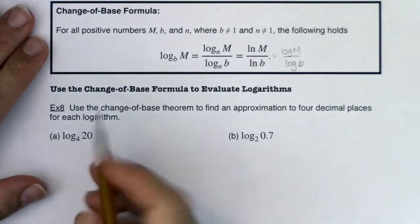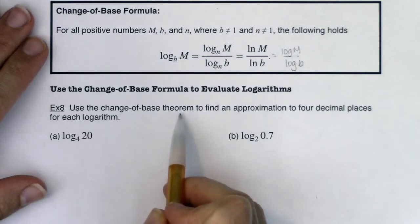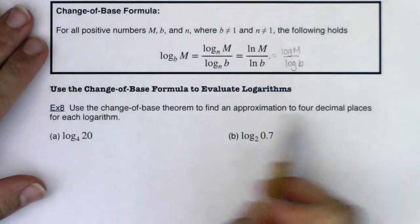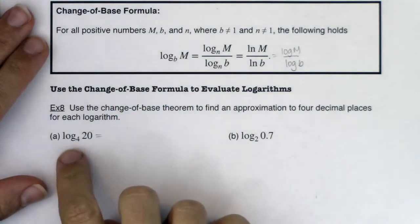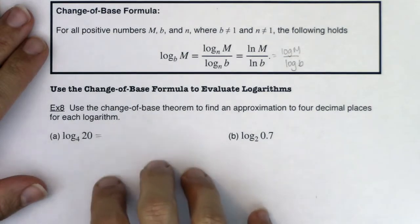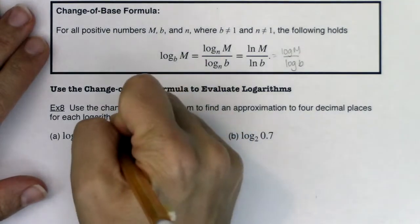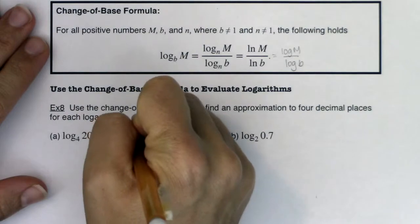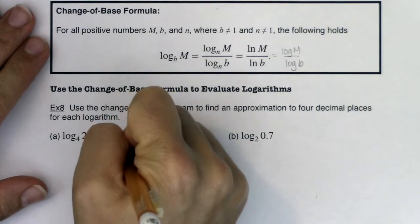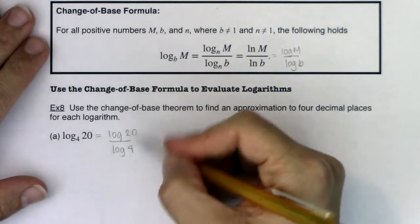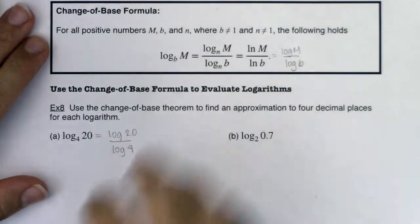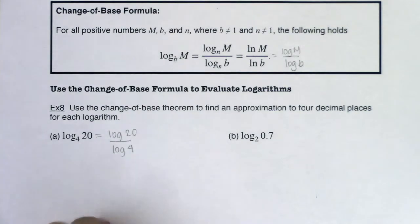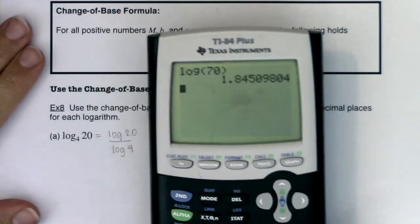So we can use the change of base theorem to find an approximation to four decimal places for each logarithm. I don't have a log base 4 button on my calculator, again the newer calculators do have that, so I can make this log of 20 over log of 4. I have calculator buttons for the common log, so I do log of my argument over log of the base, and let's see what we get.